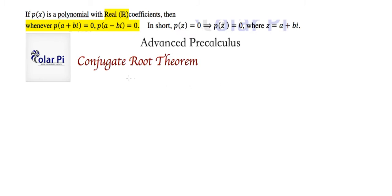Now, the conjugate root theorem can also be written for polynomials with rational coefficients. It would say that whenever p(a + √b) = 0, p(a - √b) = 0.